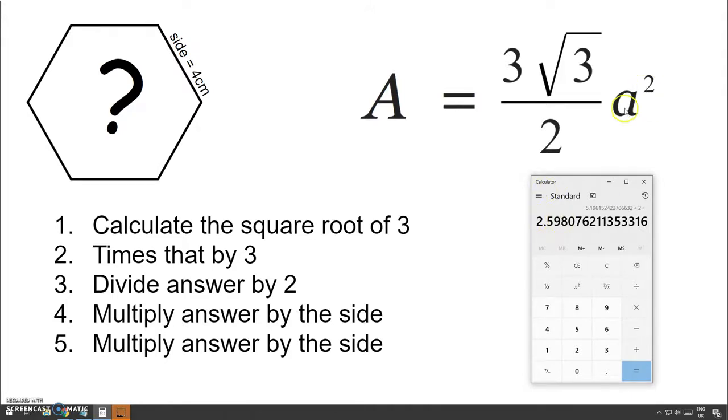And that will give us this bit here. And now all we need to do is multiply it by the length squared. And the easiest way to do that is just to multiply it by the length, and then multiply it by the length again. So, times 4 equals, times 4 equals, there you go. So, the area of this regular hexagon is 41.569,